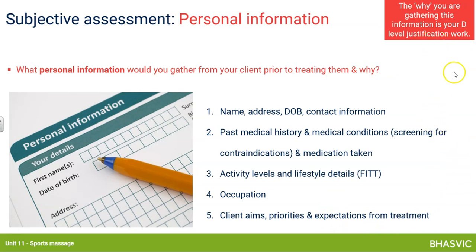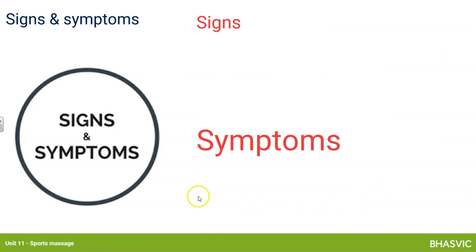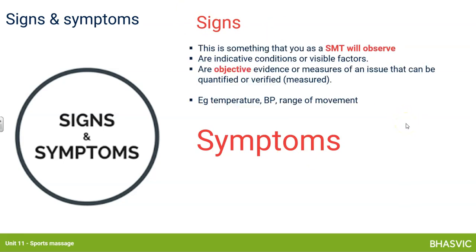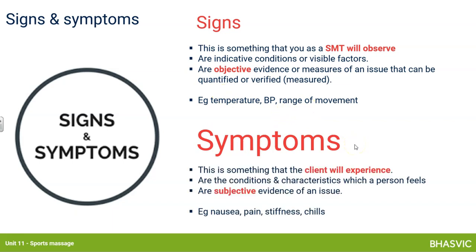You may have heard the phrase 'signs and symptoms.' Symptoms are the subjective information you gather from the client — headaches, feeling stiff in the hip joint, things they tell you. Signs are the more objective things you observe, test, and measure — they are quantifiable. For example, a range of movement test produces a numerical result. Right now we're focusing on subjective symptoms; in the next video we'll look at the objective signs and evidence you'll gather.